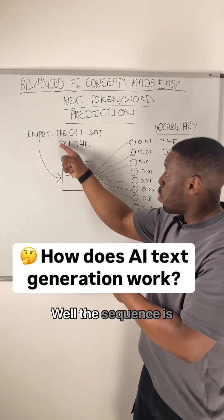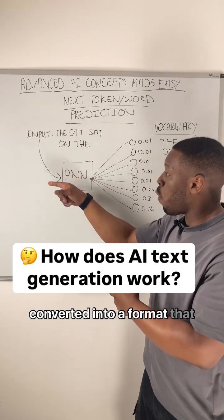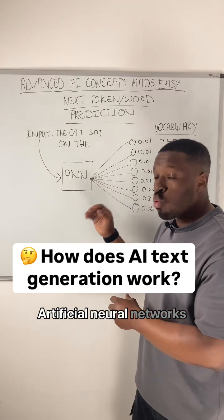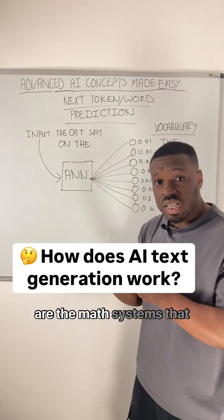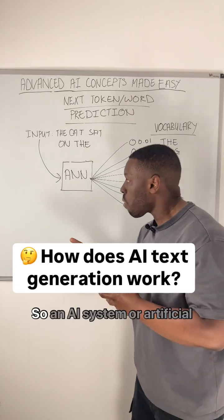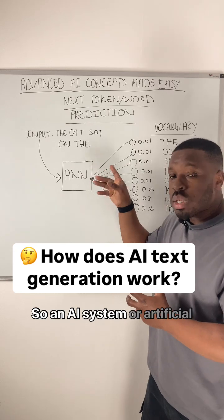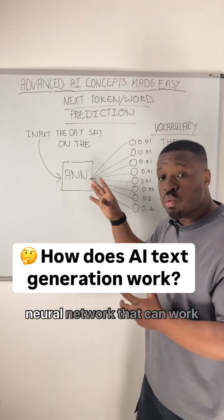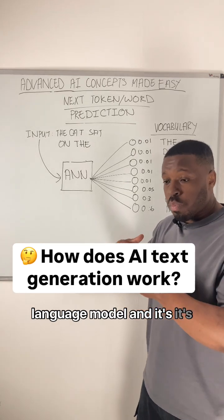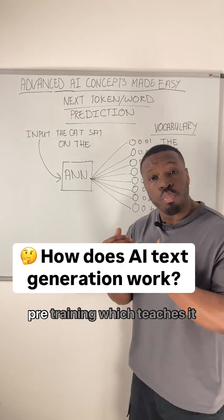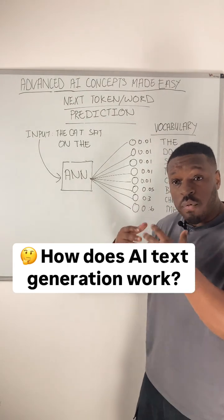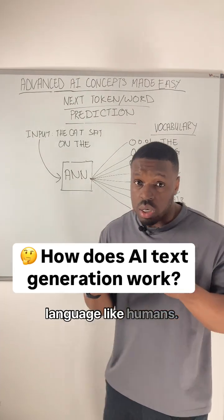Well, the input sequence is converted into a format that an artificial neural network could work with. Artificial neural networks are the math systems that underpin modern AI systems and tools. An AI system or artificial neural network that can work with text is called a large language model, and it's gone through a process called pre-training, which teaches it the patterns and structure in language so it can effectively understand language like humans.